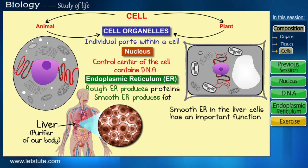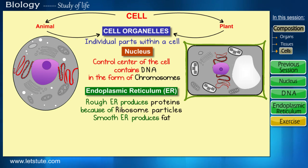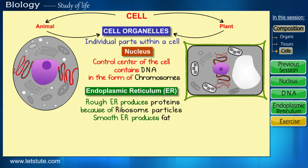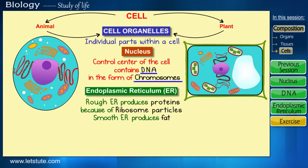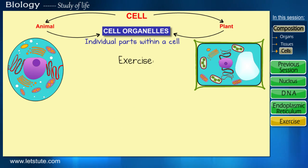And that brings us to the end of the endoplasmic reticulum. In this session we have seen two organelles of the cell: the nucleus and the endoplasmic reticulum. Let's have a recap of all the terms we studied in this session. Do catch up in the next session where we will be discussing the other cell organelles, but till then try the small exercise.